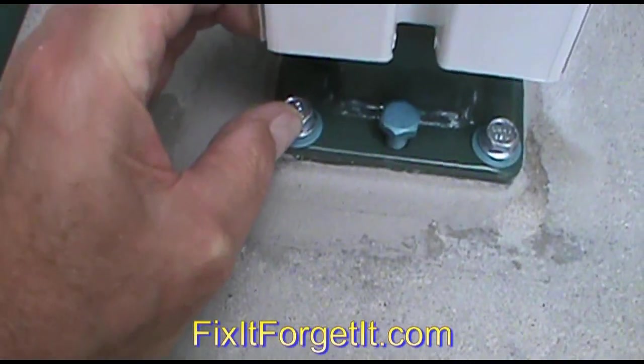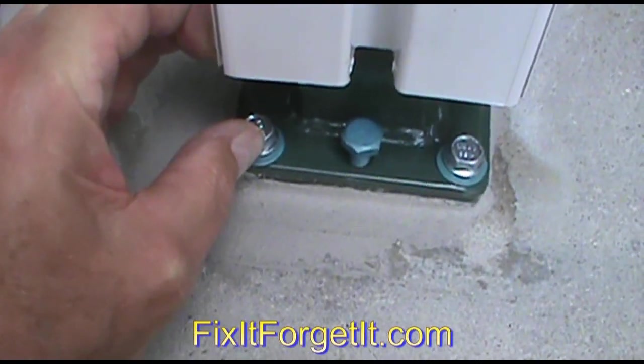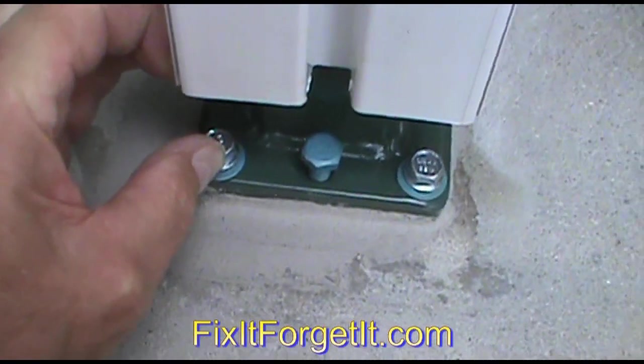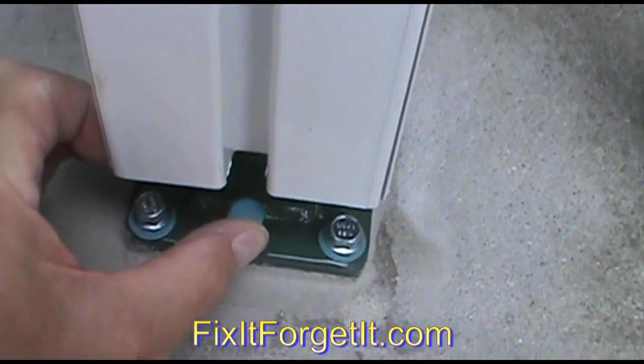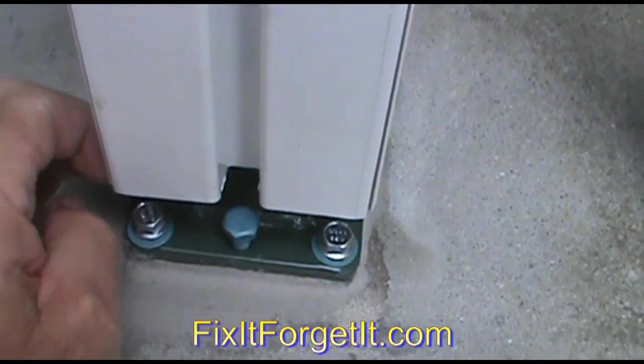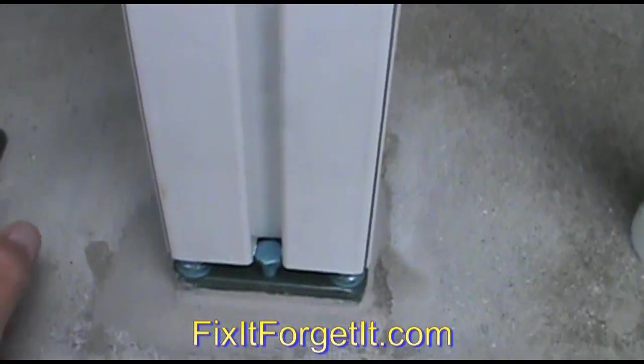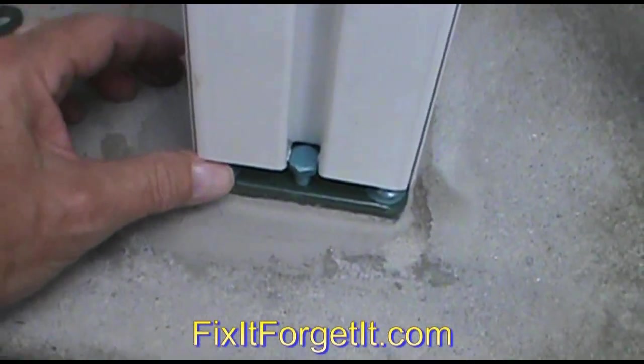You put these concrete screws in and run them down until they're within maybe a half-inch or so of bottoming out. Then you use these screws to level it up. And once you have it leveled, then you snug down the concrete screws.